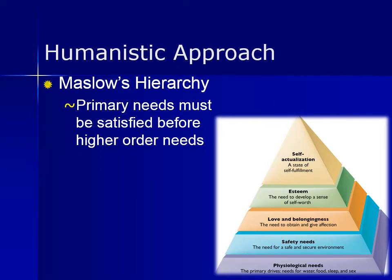After physiological and safety needs are met, the third level of human needs are social and involve feelings of belongingness. This aspect of Maslow's hierarchy involves emotionally-based relationships such as family, friends, and intimate relationships. People need to feel a sense of belonging and acceptance, whether it comes from a large social group such as clubs, work, church, or sports teams, or from small social connections like family members, intimate partners, mentors, close colleagues, or friends.